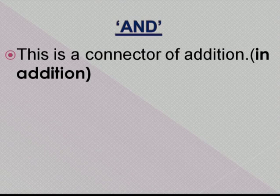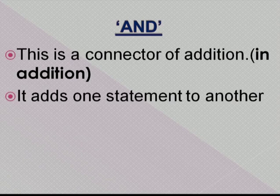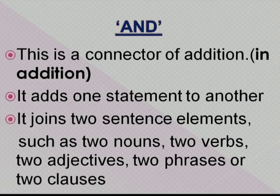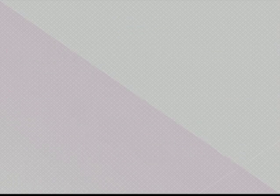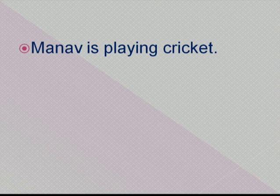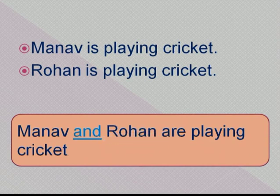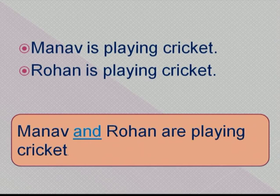The first connector is 'and', which is a connector of addition. It adds one statement to another and one fact to another. 'And' can join two sentence elements such as two nouns, two verbs, two adjectives, two phrases, or two clauses. For example, 'Manav is playing cricket' and 'Rohan is playing cricket' — these two nouns, Manav and Rohan, are connected with 'and': Manav and Rohan are playing cricket.